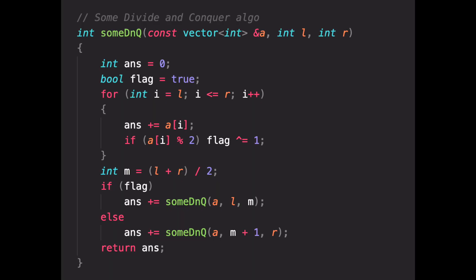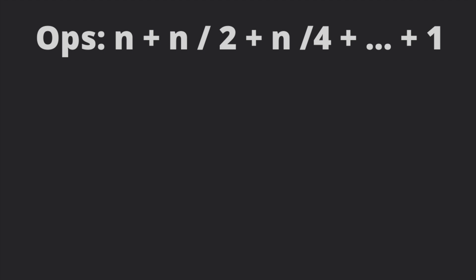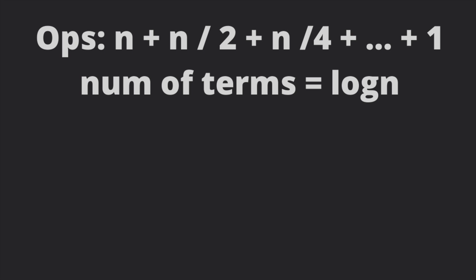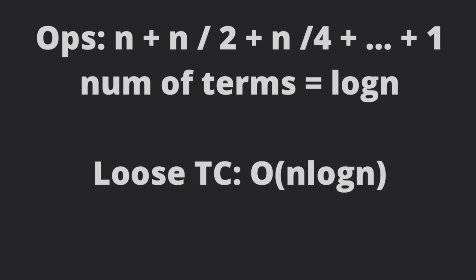Now let us consider this divide and conquer algorithm. Here we first do n operations, then n by 2, then n by 8, and so on. Now as you can see, there are only log n terms and every term is less than or equal to n. So a loose upper bound is n log n, like previous. And to find a tighter one, you can just solve this harmonic progression if you like. But n log n is also a very decent bound.